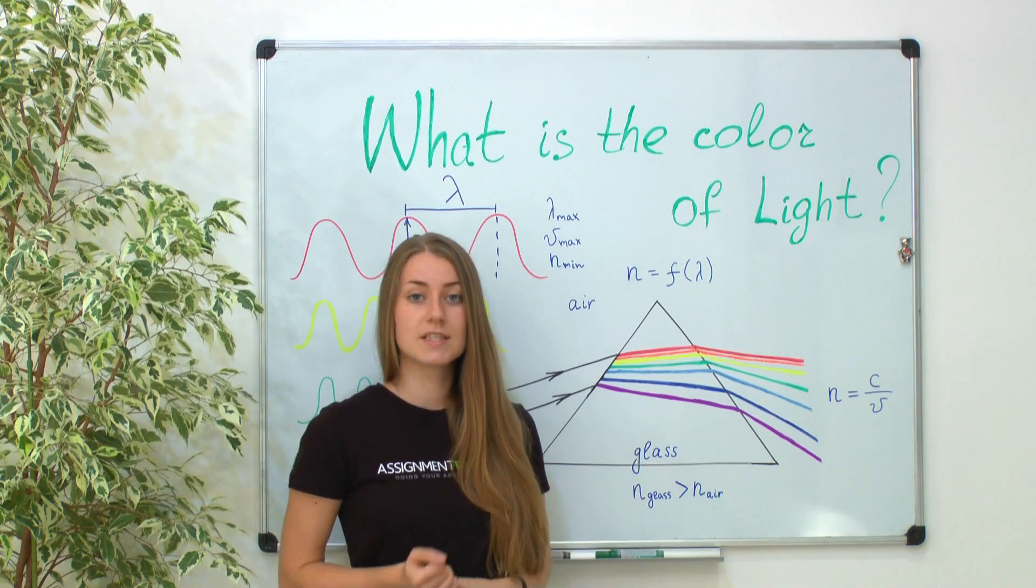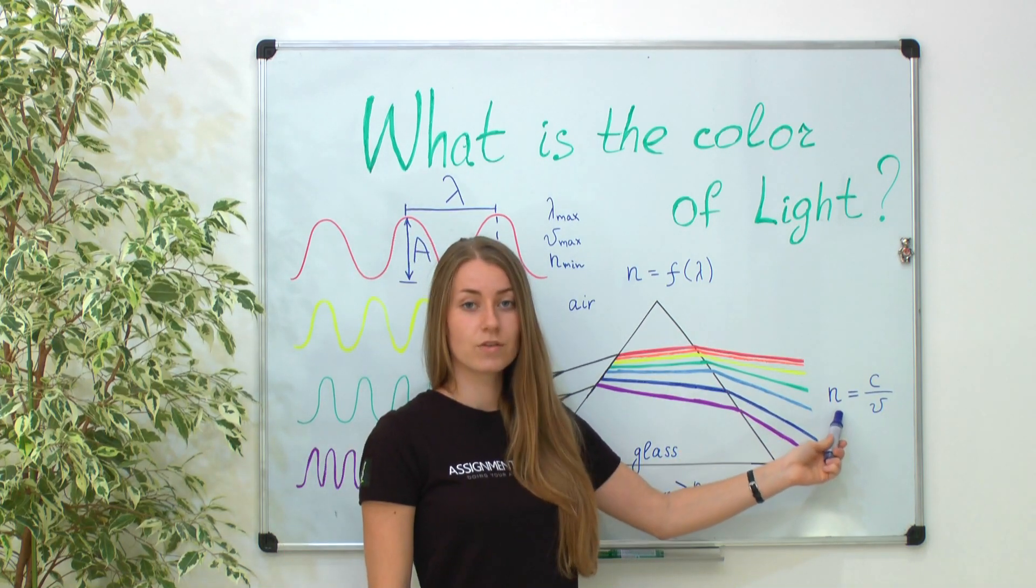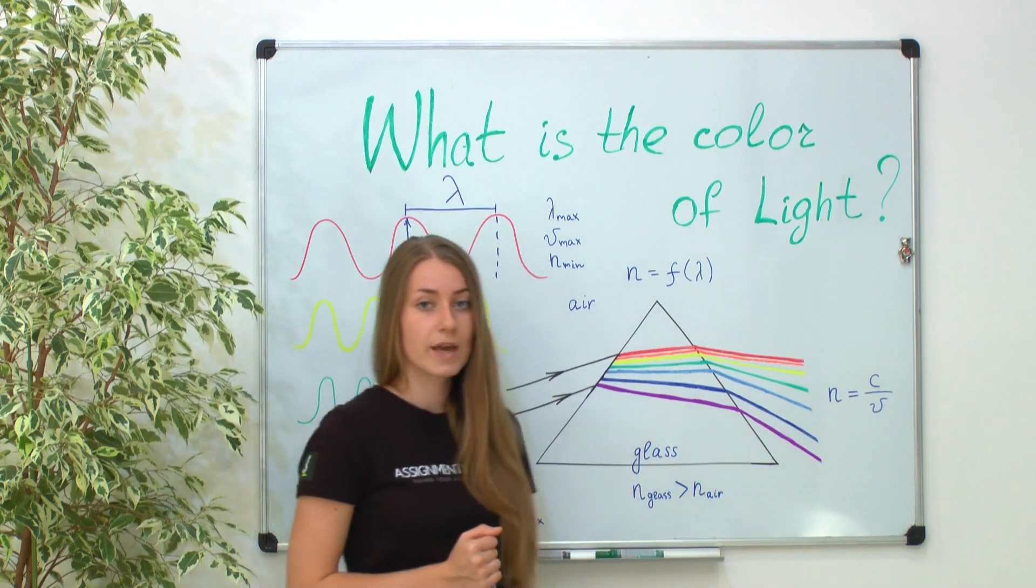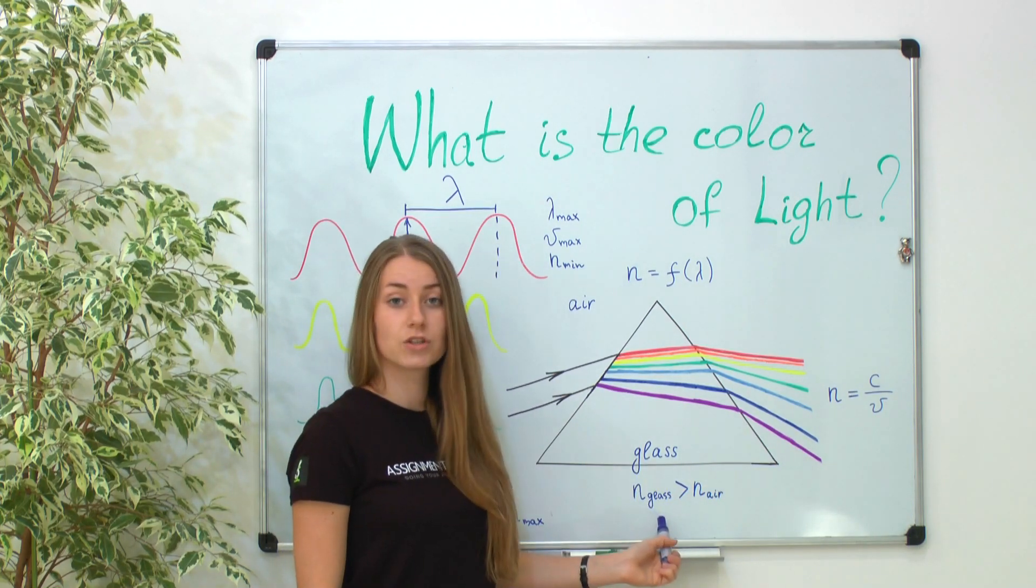Physically, it simply means that speed of light in medium will be n times smaller or greater than in the air. In our case, light comes from air to glass, where index of refraction is bigger.